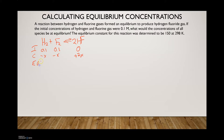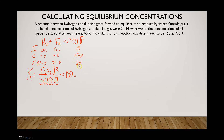The equilibrium row is where you just bring everything down together. Now we write our equilibrium expression. K is equal to the concentration of HF squared divided by the concentration of H₂ times the concentration of F₂, which equals 150. We substitute in the equilibrium values: so we have 2x squared divided by (0.1 minus x) divided by (0.1 minus x).